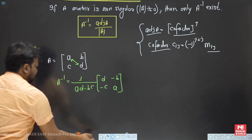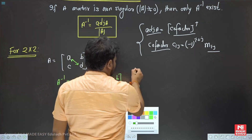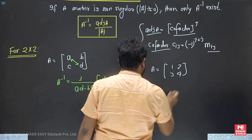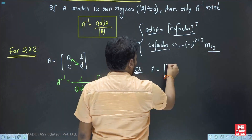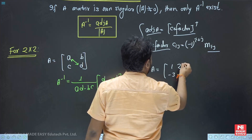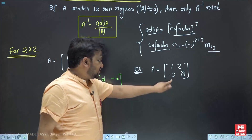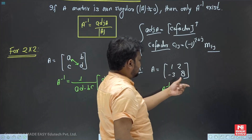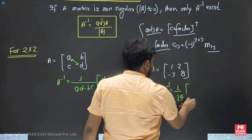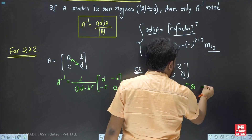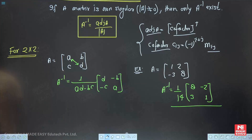For example, say we have the matrix A equal to [1, 2; -3, 8]. To calculate A inverse directly for a 2×2: the determinant is 8 minus (minus 6), that is 14. So it is one over 14 times [8, -2; 3, 1] — swap the diagonal (1 replaced by 8, 8 replaced by 1) and change the signs. That's A inverse. For a 2×2 matrix, it's very simple.